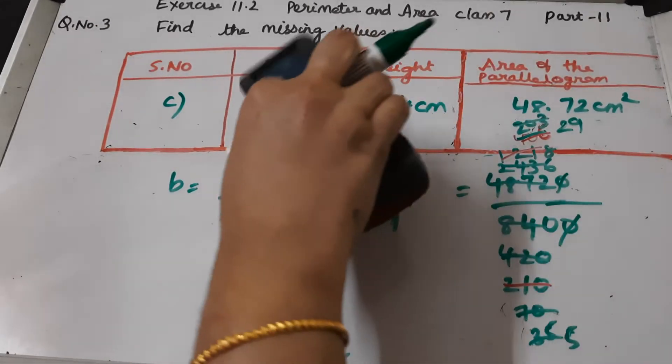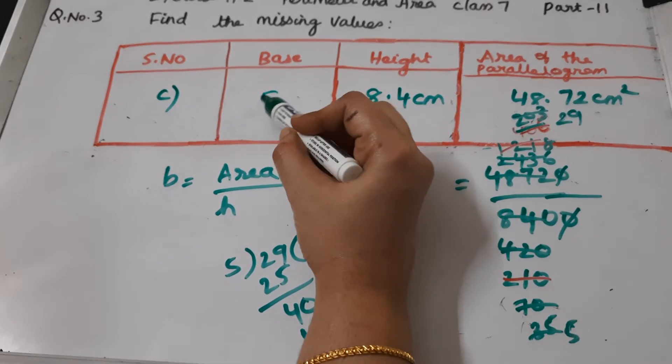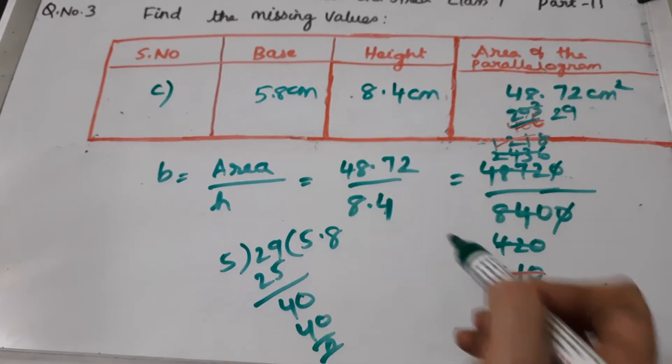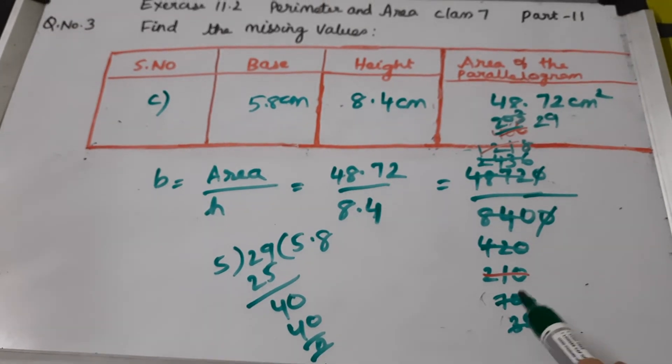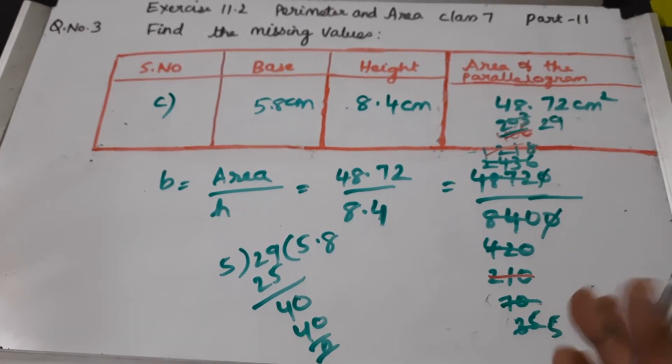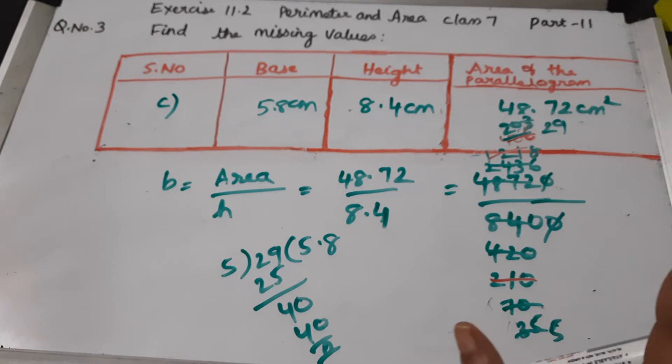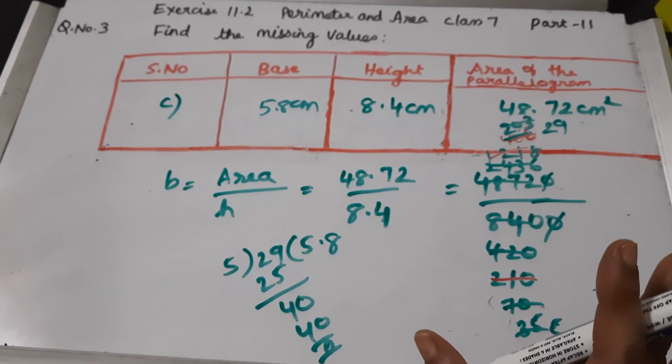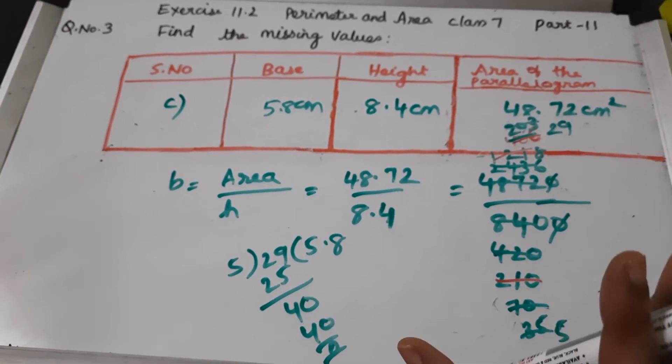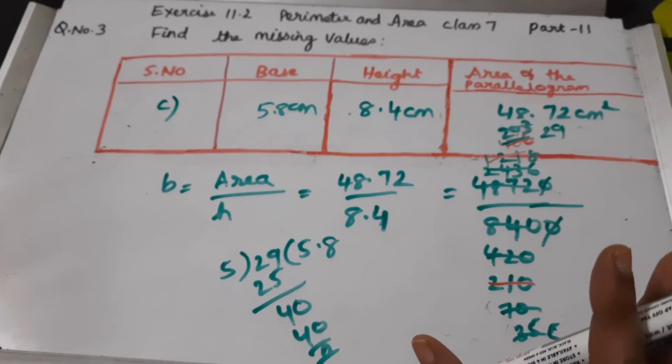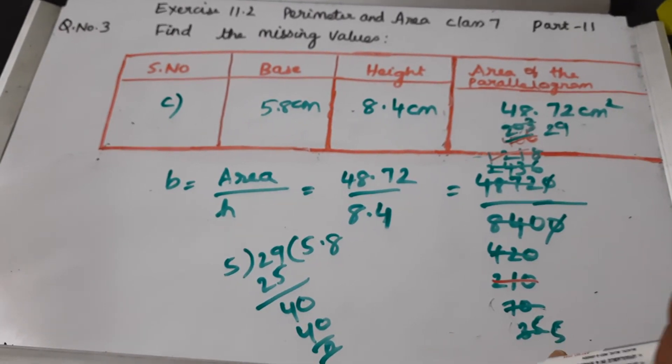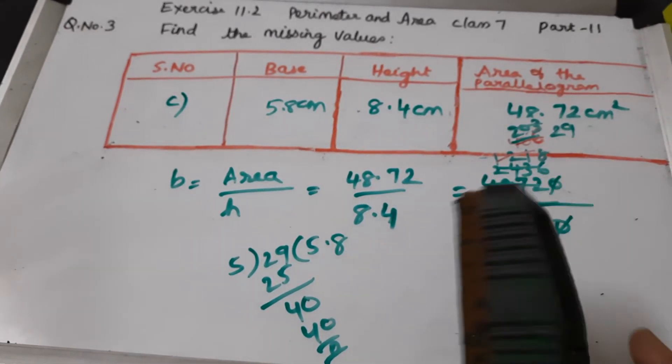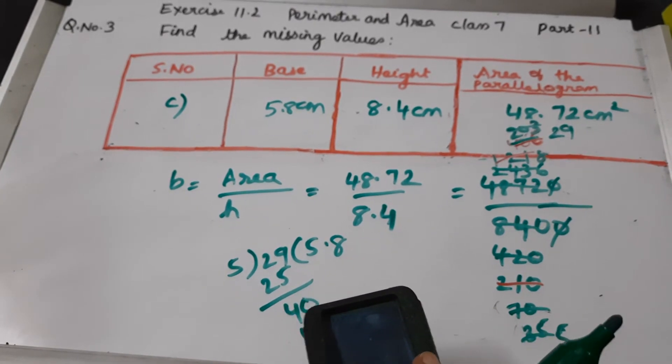Did you understand? We can do it in n number of ways, but take the help of the simple tables first, so that simplification is easier and you can do it quickly. This is the answer. Now let us go to the d bit.